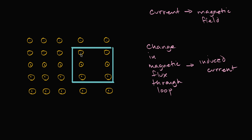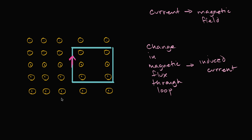For example, right now the magnetic field is pointing out of the screen. If I were to make it even stronger in that outward direction — so the change in flux gets even stronger outward — it is actually going to induce a current. The current that it will induce is going to go in a clockwise direction around this loop. That is because the change in magnetic flux induces a voltage, an electromotive force, that causes this current to flow.